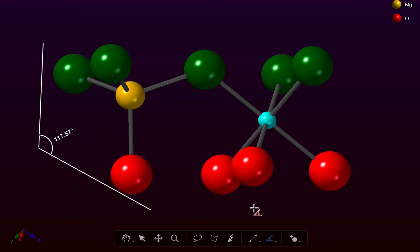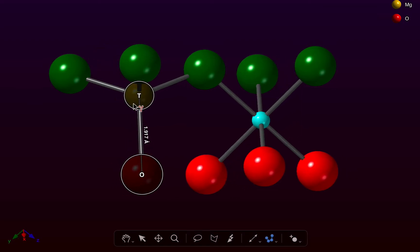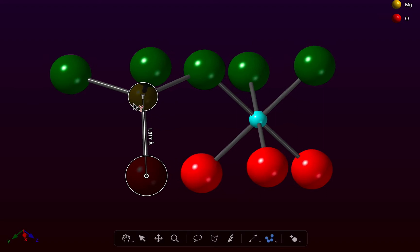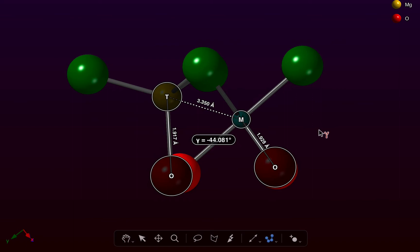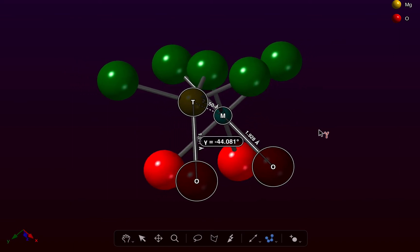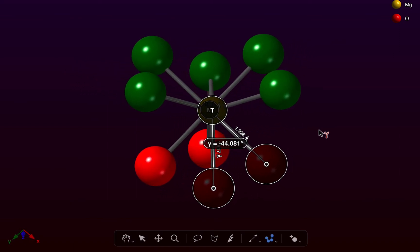And we can measure torsion angles using the Torsion Angle tool. This requires four clicks to select the four atoms that we are interested in, but we have a rollover mode as well. And here we have the signed torsion angle between the four atoms that are being clicked.